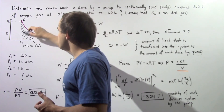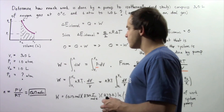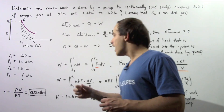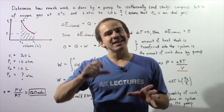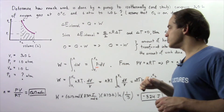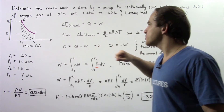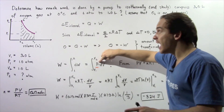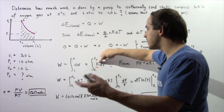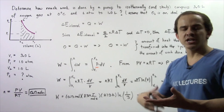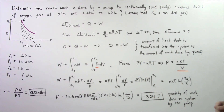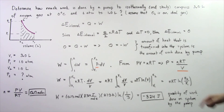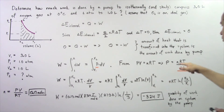We want to calculate the area underneath the PV curve, so we integrate. The work equals the integral of dW from position 1 to position 2, where dW = P dV. So the work equals the integral from V1 to V2 of P dV. Because pressure is not constant, we substitute using the ideal gas law: PV = NRT, so P = NRT / V. We replace pressure with this expression.